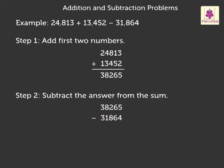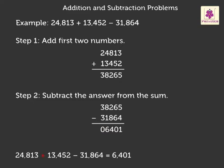Thus, by subtraction, we get the answer as 6,401. Therefore, 24,813 plus 13,452 minus 31,864 is equal to 6,401.